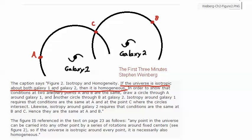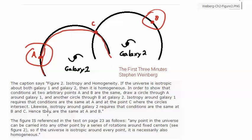In order to show that the conditions at two arbitrary points A and B are the same, draw a circle through A around galaxy one. So that's the circle through A around galaxy one. And another circle through B at galaxy two.